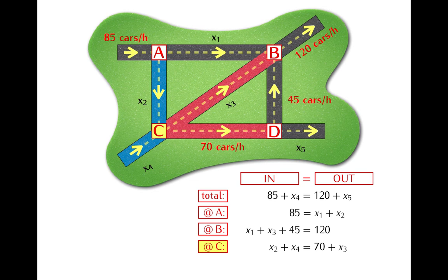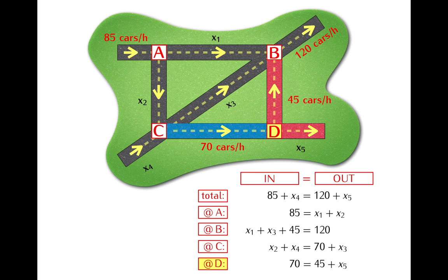And lastly at intersection D the flow in goes along a single street that carries 70 cars per hour and there are two streets going out and these streets carry 45 plus x5 cars per hour. And so these are all equations that we get here.